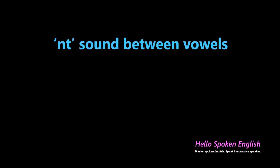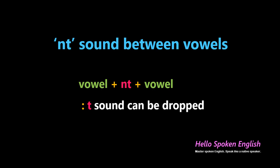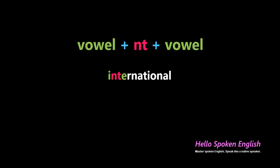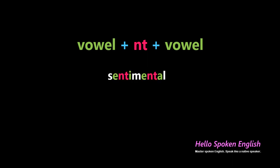Rule number eight is the nt sound between vowels. When the nt sound is between vowels, the t sound can be dropped. For example, 'international' — the nt sound is between the i and e vowel sounds, so it can be dropped: 'international.' Another example is 'sentimental' — there are two nt sounds between vowels: 'sentimental.'